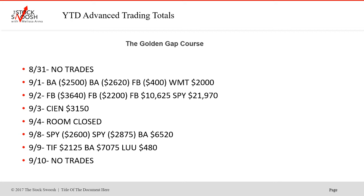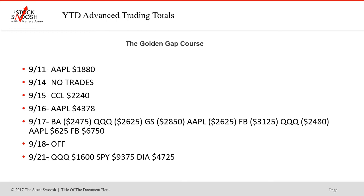Beginning of September — September was a bearish month. BA lost twice on the 1st, Facebook lost, Walmart won. September 2nd, Facebook lost twice, then a big one, then another big one on the SPY. CN won on the 3rd. Room closed on the 4th. September 8th, SPY lost in two, BA won. TIFF won on the 9th, BA won, and Lulu on September 9th. September 10th, no trades. September 11th was Apple. September 14th, no trades. September 15th, CCL. September 16th, Apple won. September 17th, BA lost, Qs lost, Goldman lost, Apple lost, Facebook lost, Qs lost, then Apple won and Facebook won.